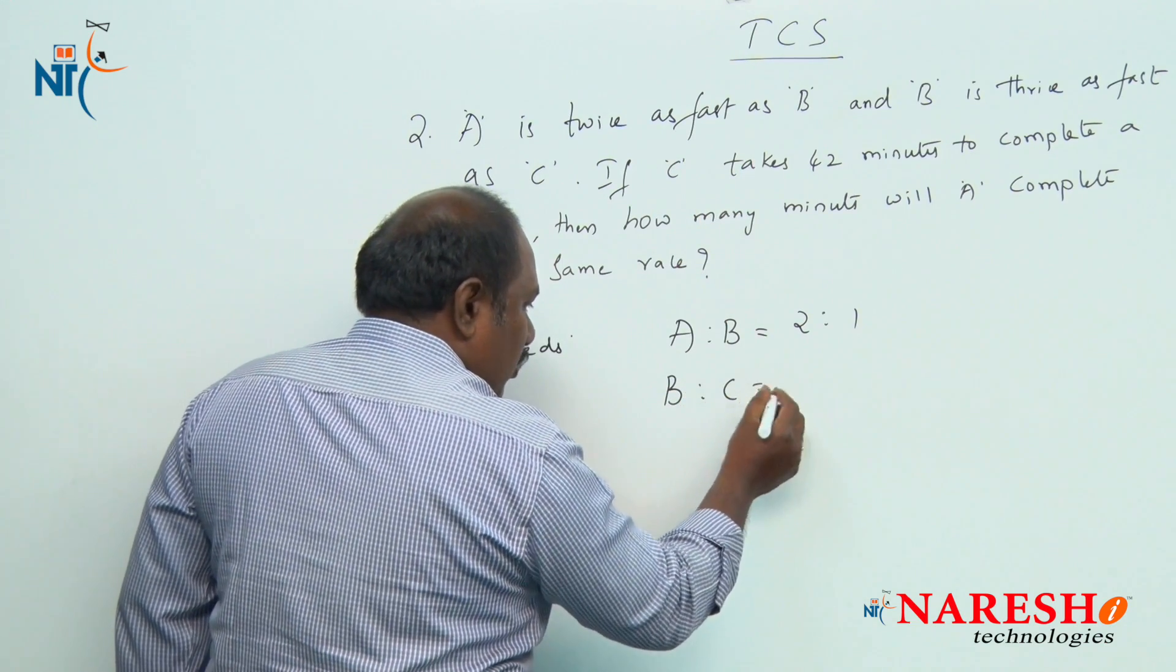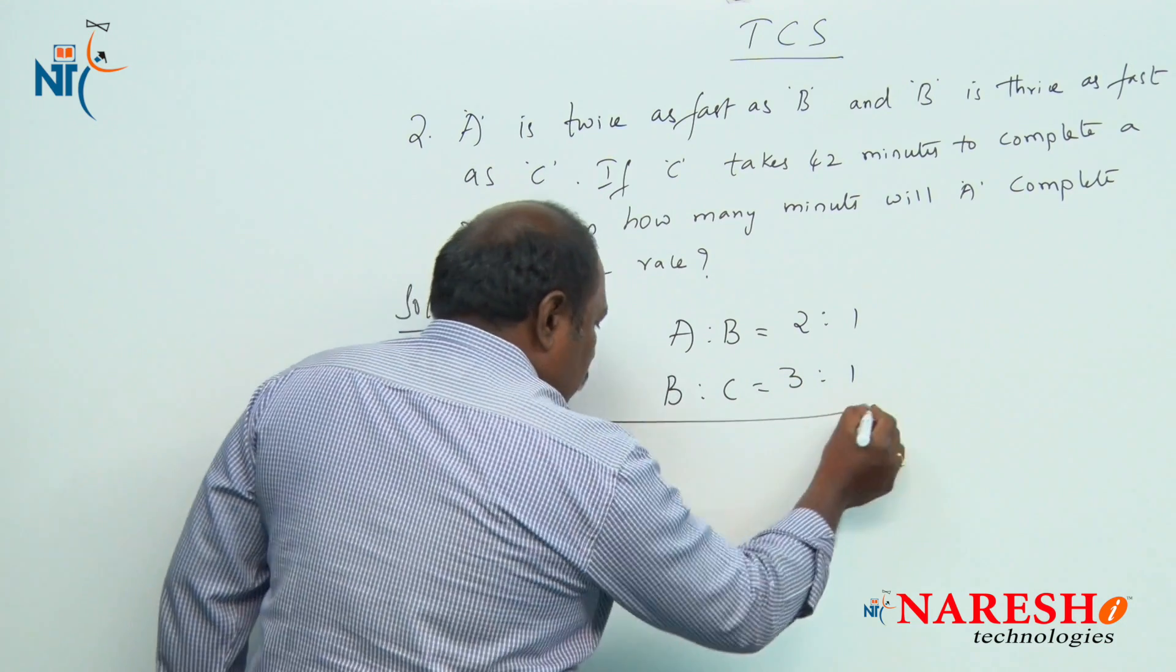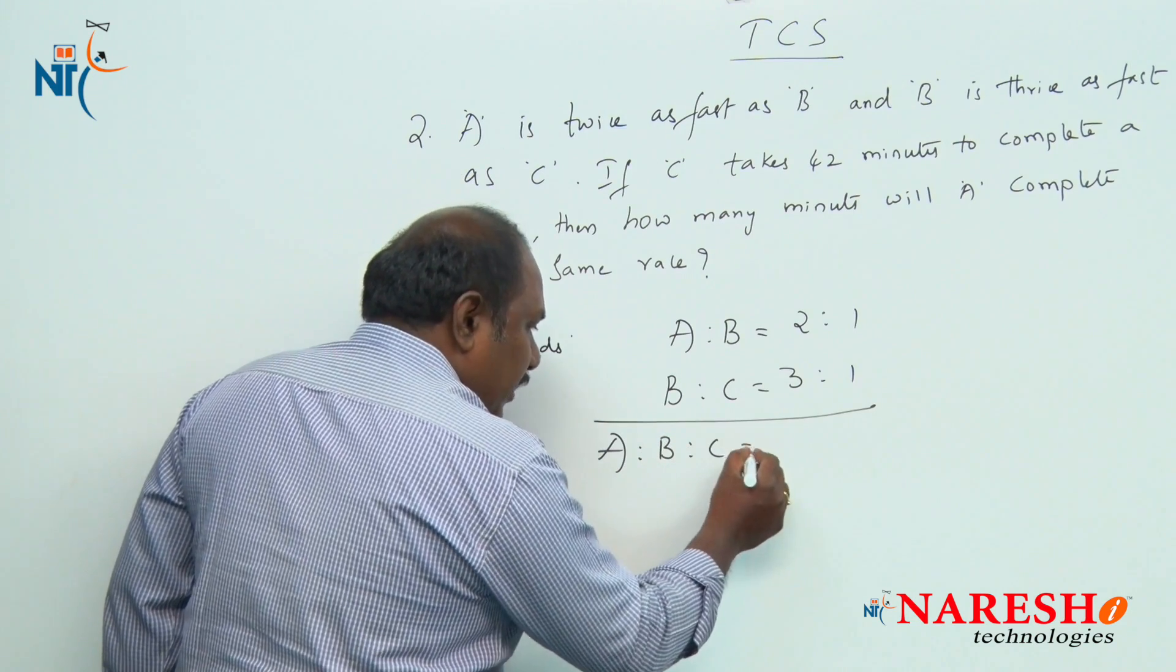So the ratio of speeds of B and C will be in the ratio of 3 is to 1. What is the ratio of the speeds of A, B and C?